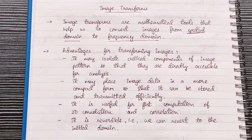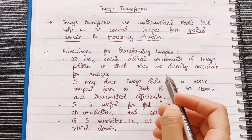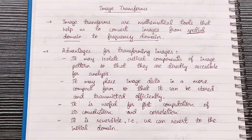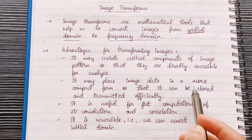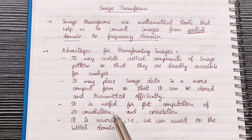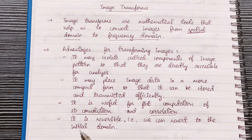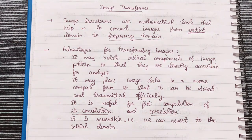Let's look at some advantages for transforming images. First, it may isolate critical components of image patterns so that they are directly accessible for analysis — some components of the image become directly accessible when it is in the frequency domain. Next, it may place image data in a more compact form so that it can be stored and transmitted efficiently. It is also useful for fast computation of 2D convolution and correlation. And it is reversible, which means that if you want the original image back, we can get it very easily. The original image isn't changed in any way — it is just represented differently when image transforms are used on it.